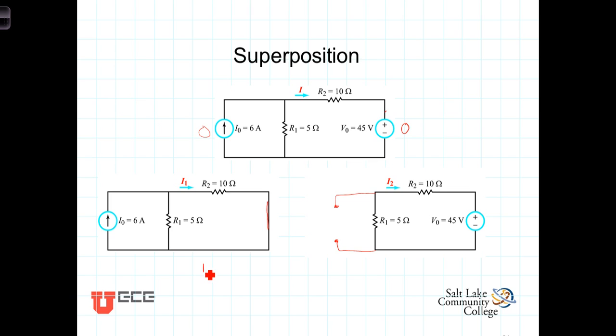Alrighty, first of all, I1 can be calculated using a current divider. These two resistances are in series and we have the total current I coming in. I1 then is going to equal 6 amps times the 5 ohms divided by 5 plus 10. Well, 5 over 15 is 1 third. 1 third of 6 is 2 amps. So the component of I due to the independent current source is 2 amps.